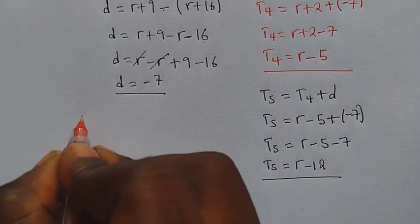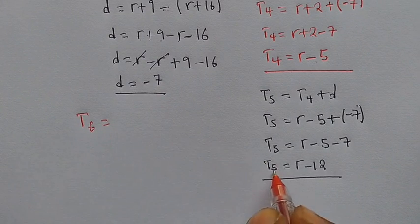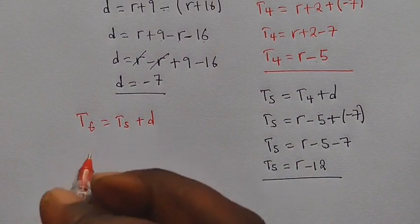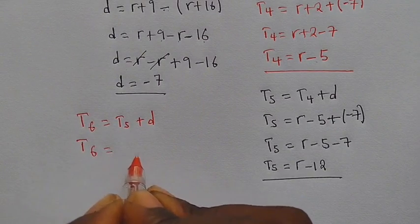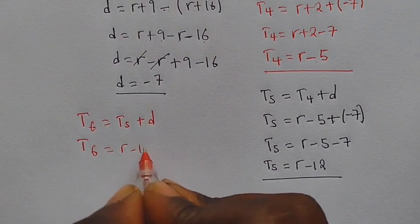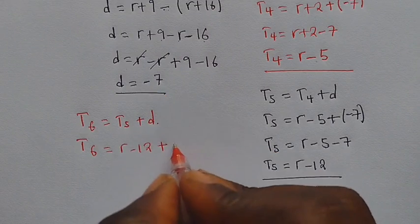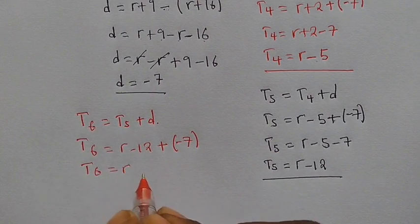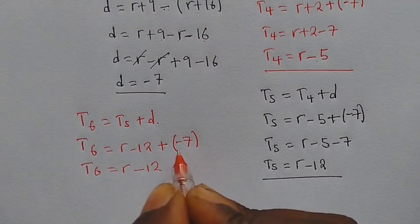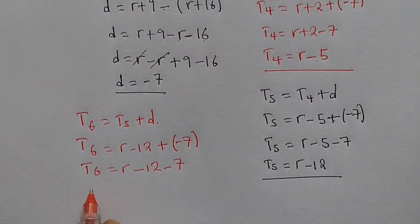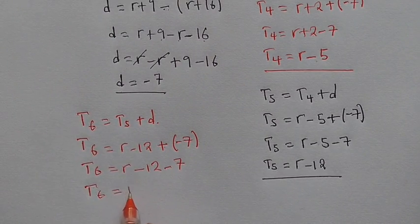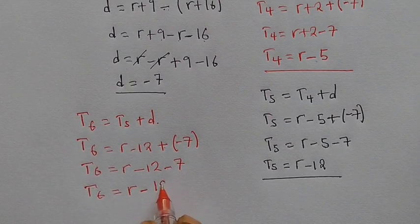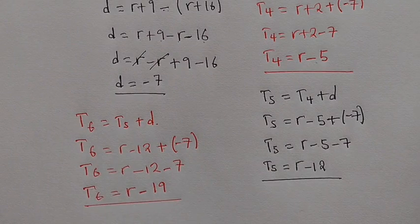To find term six, we get the preceding term — term five — and add the common difference. Term six equals R minus 12 plus negative 7. So term six equals R minus 12 minus 7, giving us R minus 19.